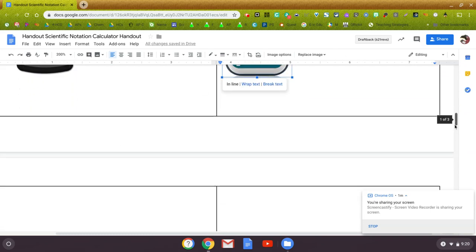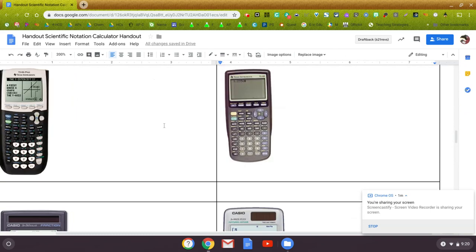If you keep going down on the graphing calculators, if you hit your second key and right above the 7, there's an EE key right here. Also, on this older TI graphing calculator, there's an EE key right above the 7 if you hit the second key.